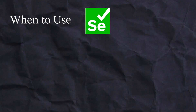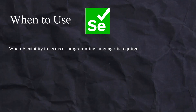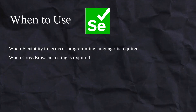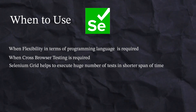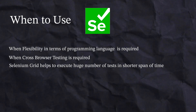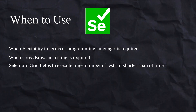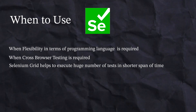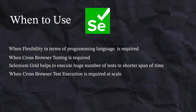Selenium is preferred when your team needs language flexibility, since Selenium supports Java, Python, JavaScript, C#, and more while Cypress only supports JavaScript. For running tests on different browsers simultaneously, Selenium Grid provides great infrastructure for cross-platform and cross-browser testing at scale. Cypress does not support browsers like Safari, which restricts cross-browser testing compared to Selenium.